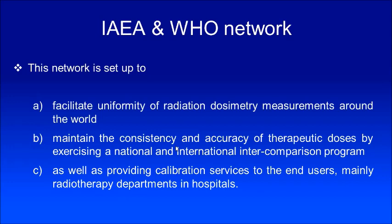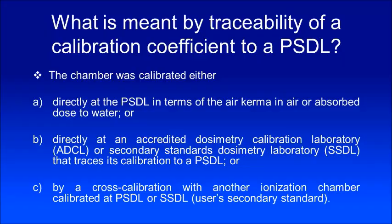They bring in all the primary standard and secondary standard laboratories and several user clinics into the network, maintaining consistency and accuracy of therapeutic doses by exercising a national and international intercomparison program. Earlier they were using TLD for this — they called it a TLD audit. Now they use glass dosimeters, called an RPLD audit. They also provide calibration services to end users. If your country does not have a secondary standard dosimetry laboratory, you can approach the IAEA for calibration of your dosimeter.